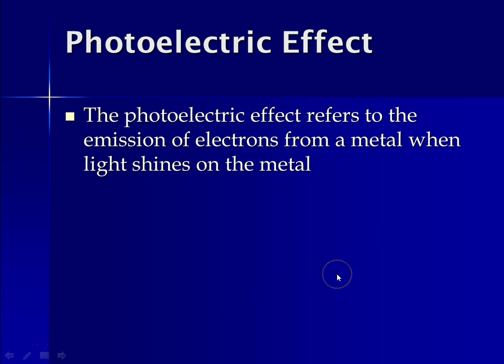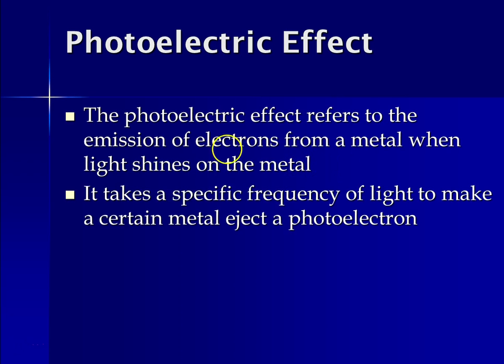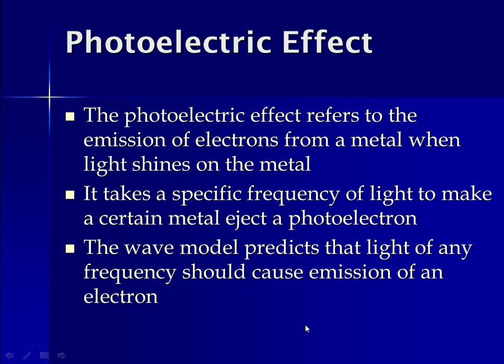So the photoelectric effect was first observed, I want to say in the late 1800s, like the 1880s. And it refers to the emission of electrons from the surface of a metal when light shines on the metal. So if you shine light on a sheet of metal, you could eventually get that sheet of metal to spew electrons and you see light emit from it. And it was determined that it takes a specific frequency of light to make any given metal eject these photoelectrons. So the wave model predicts that light of any frequency should cause this to happen. So there was a lot of consternation about why this happened. If you took a sheet of metal and shone light on it, it would only show electrons coming out of it when a specific wavelength of light hit it.